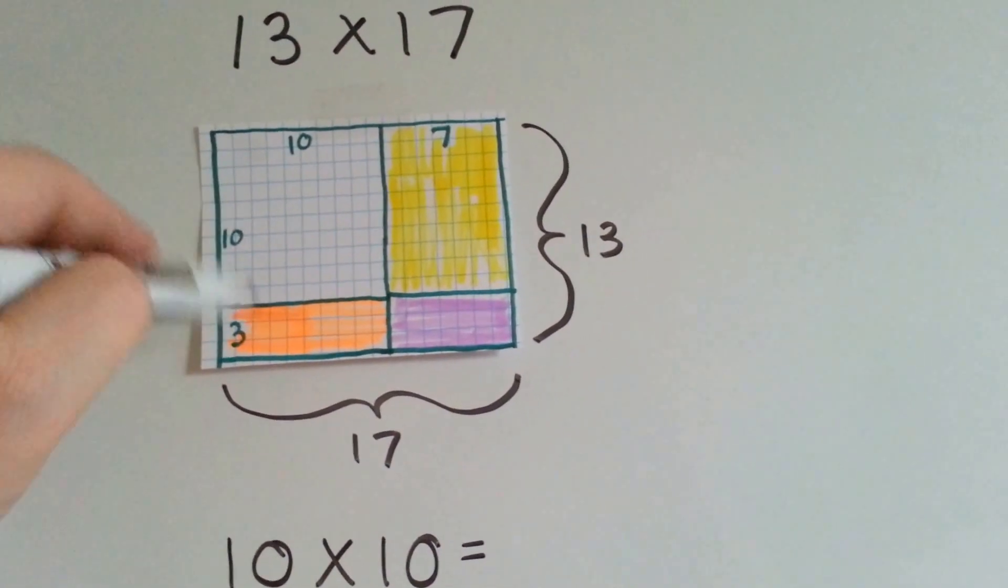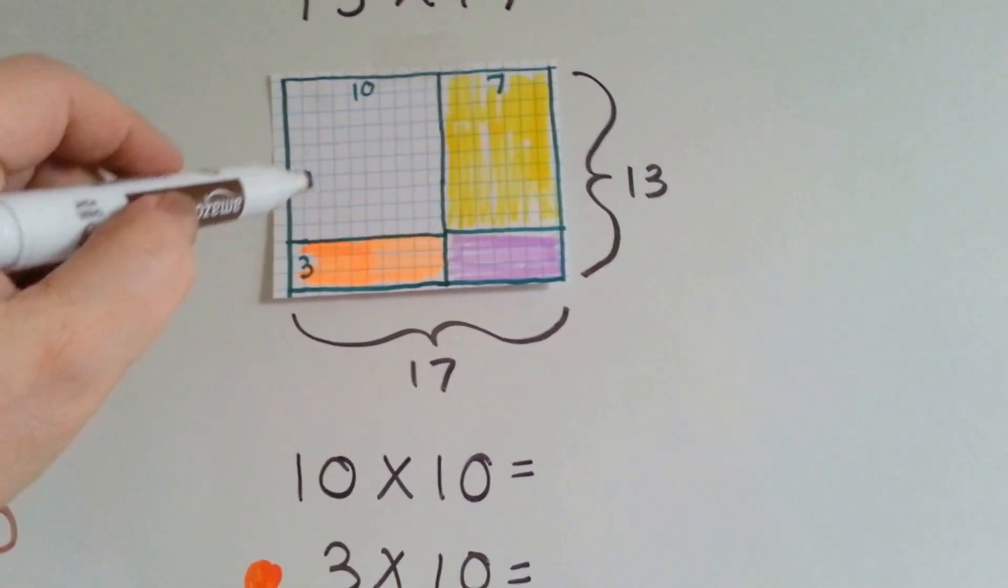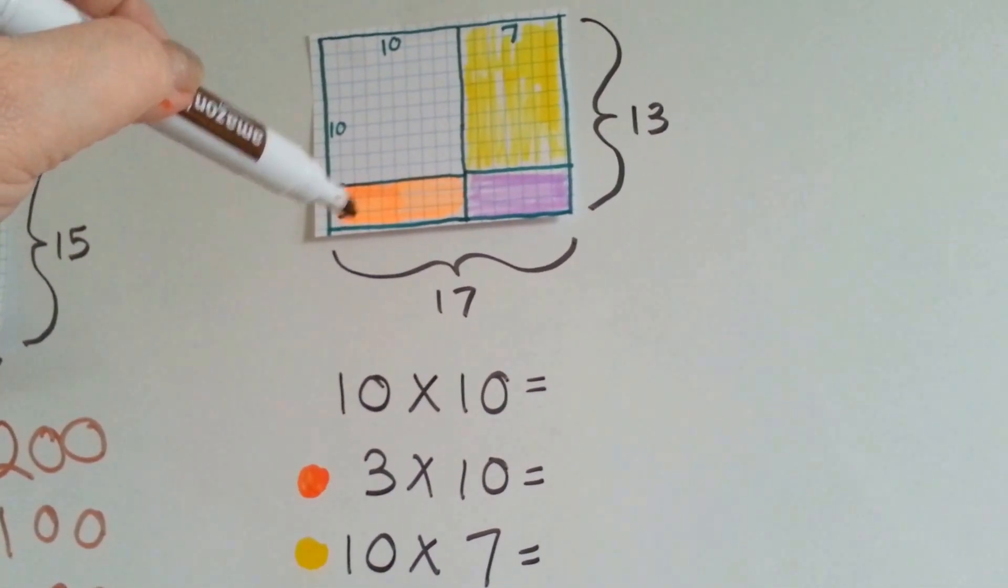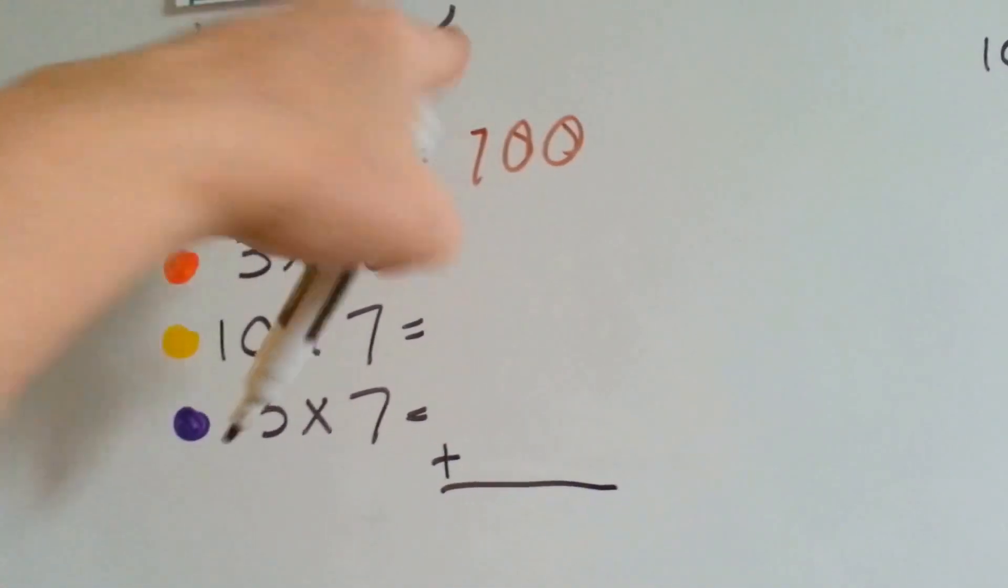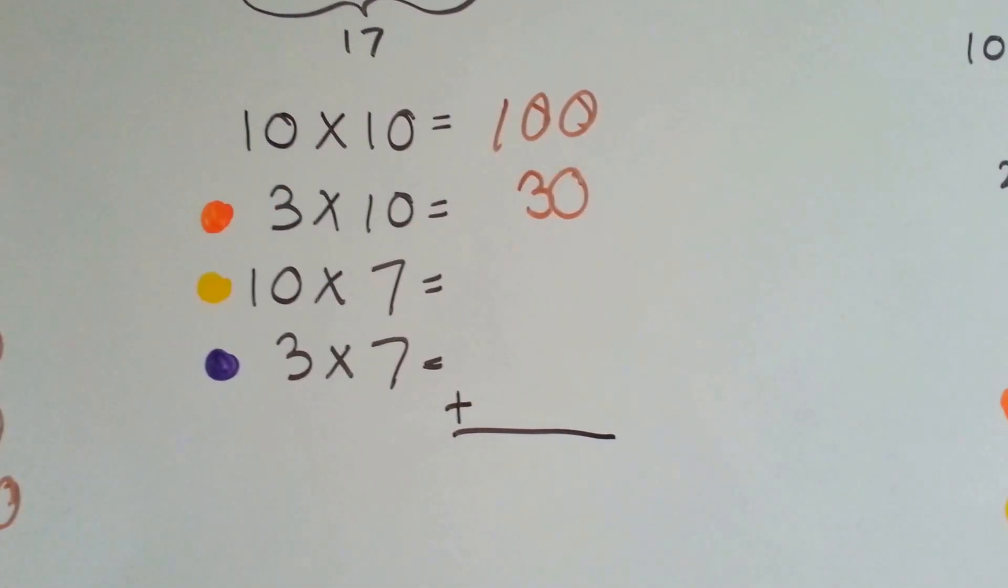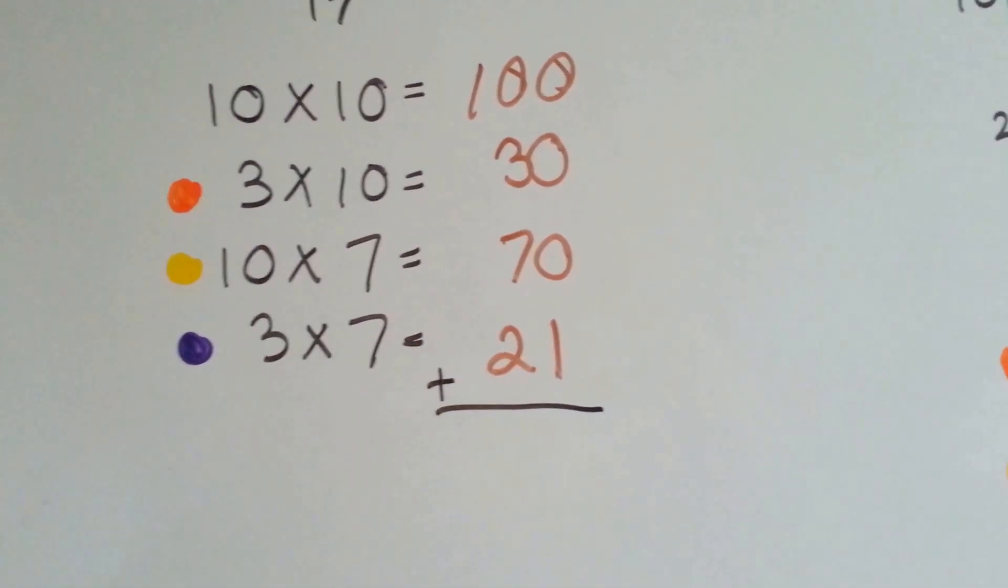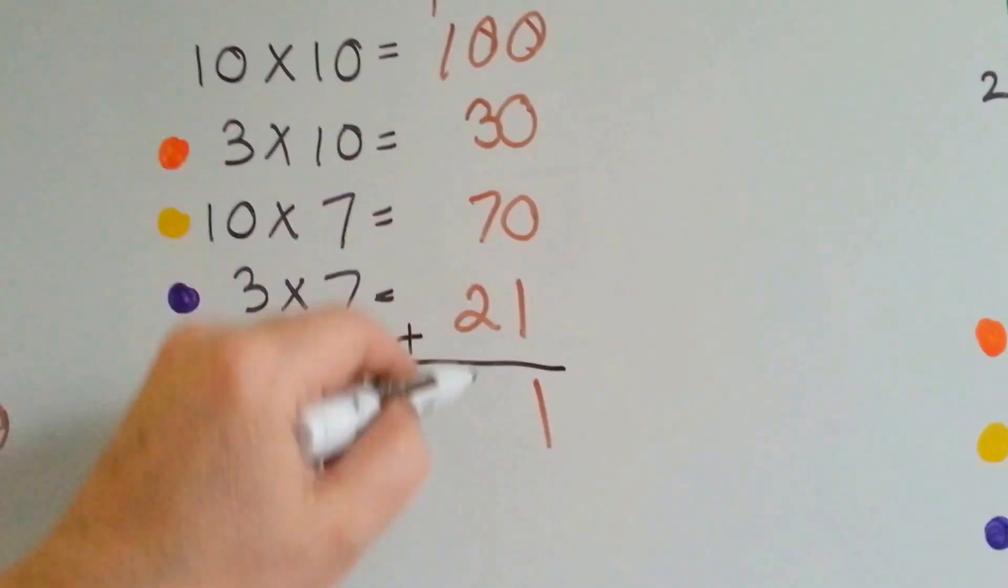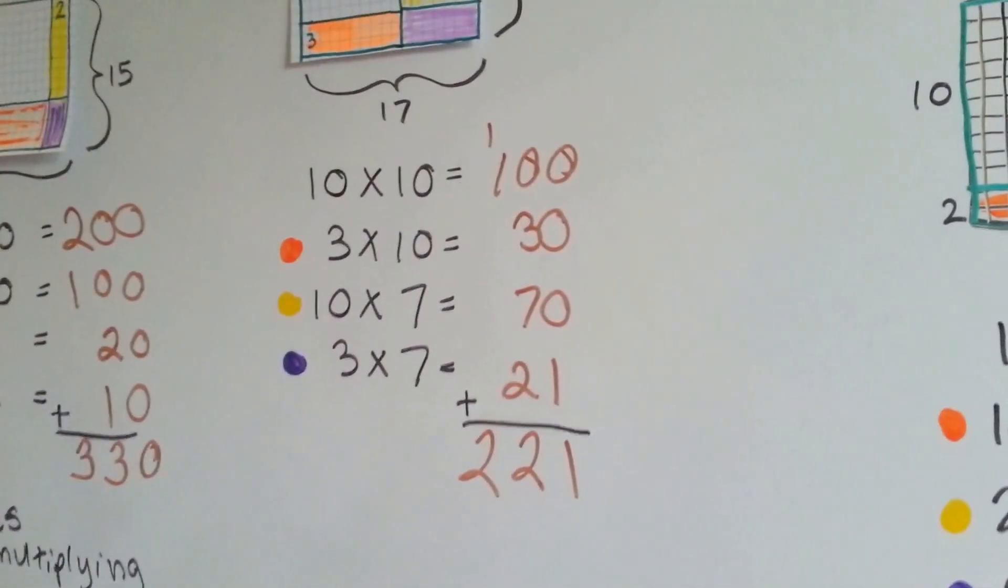13 times 17. We've got 13 boxes going this way and 17 boxes going this way. Maybe you could try doing this one with me. We've got a 10 times 10. We've got a 10 times 7. We've got a 3 times 10 and a 7 times 3. 10 times 10 is 100. 3 times 10 is 30. 10 times 7 is 70. And 3 times 7 is 21. Now let's add these up. We've got 1. We've got 10, 11, 12. Carry the 1, put the 2 down. And 1 and 1 is 2. So, 13 times 17 is 221.